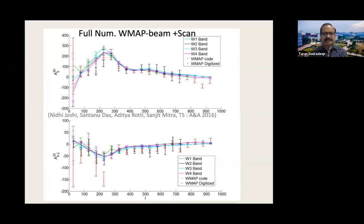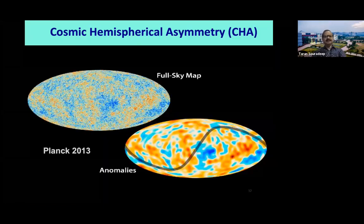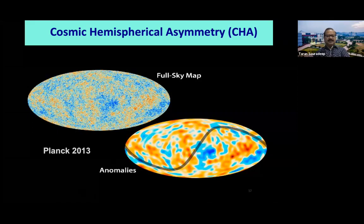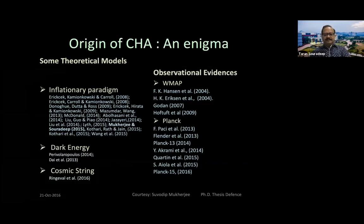Now I get to the cosmic hemispherical asymmetry. To be honest, I was one of the strongest disbelievers initially. People talked about this since the COBE days — looking at the COBE map it was very clear to the eye that the lower hemisphere has much stronger fluctuations than the upper hemisphere. But the fact that this has persisted over WMAP and Planck makes it quite interesting. As part of the Planck team, we went out to measure this.